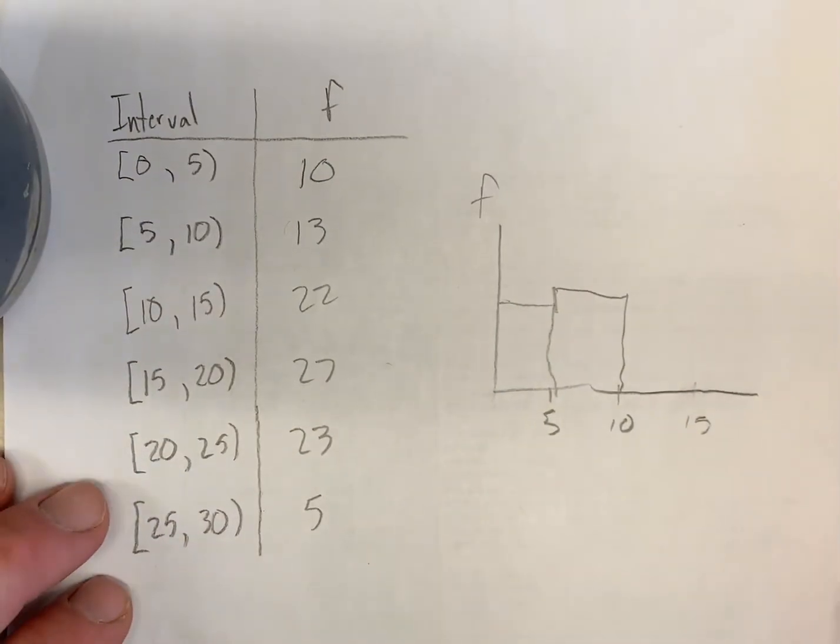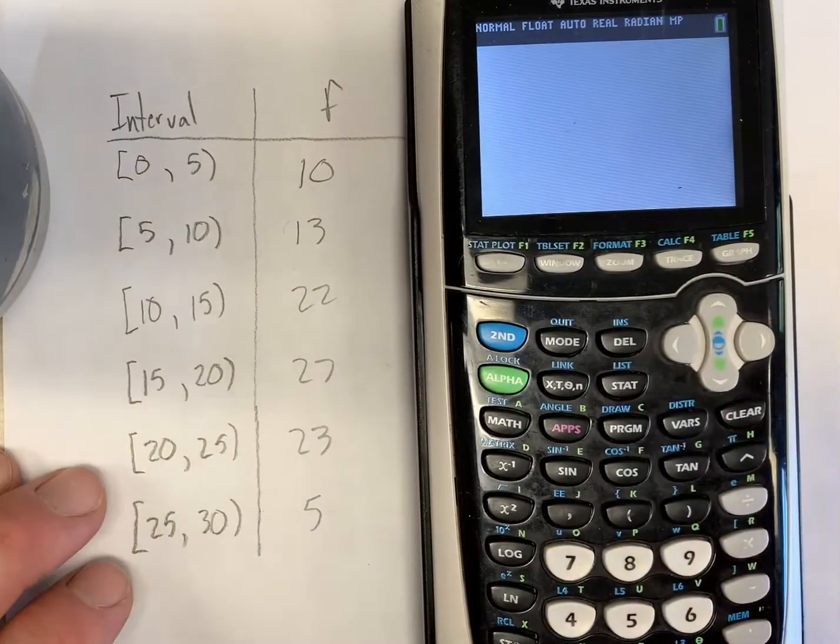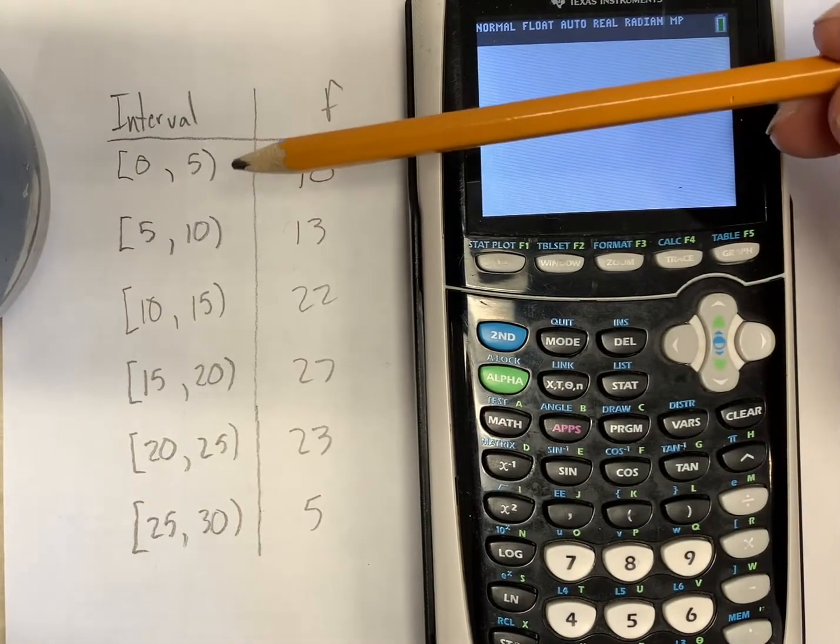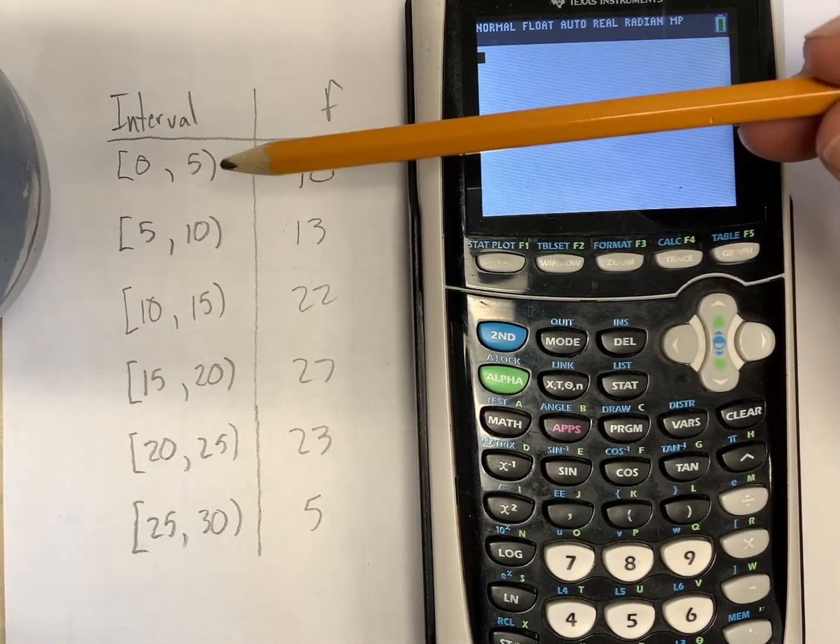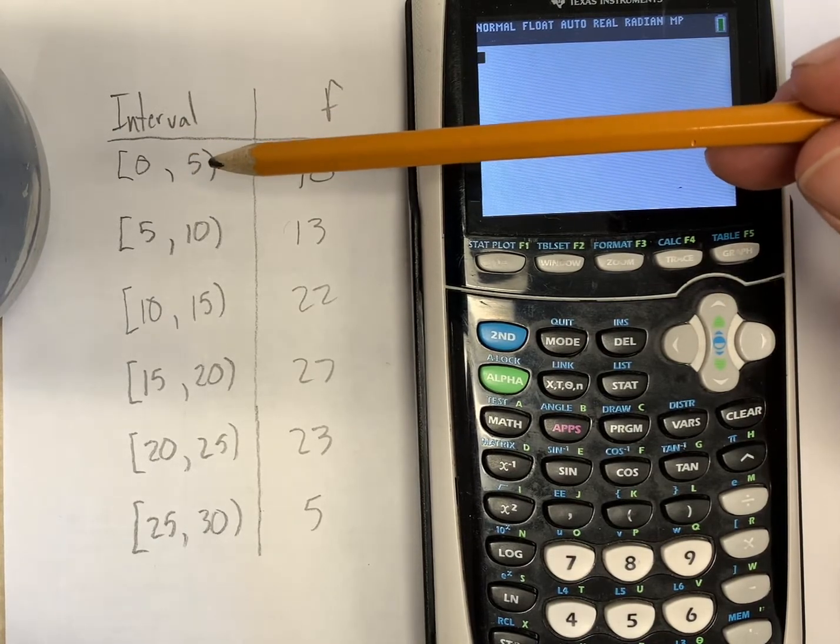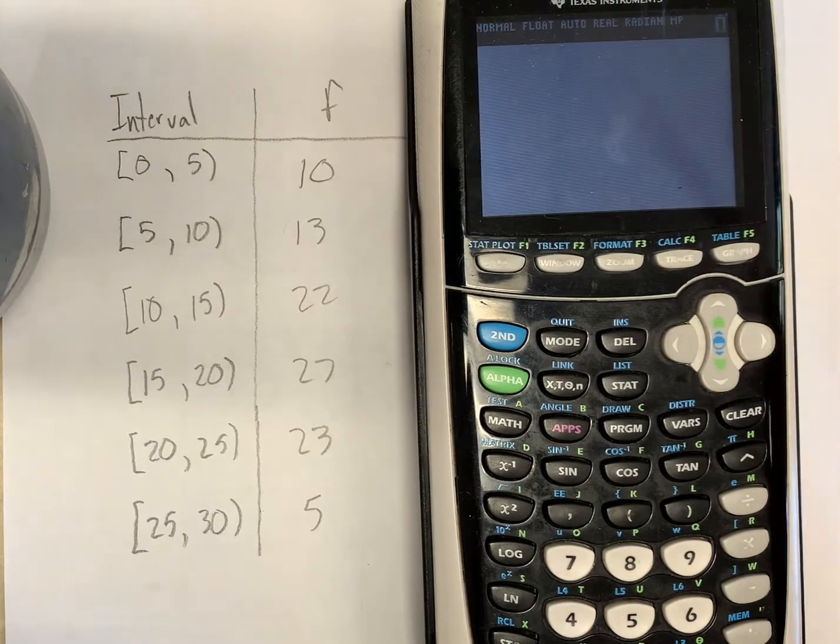But what if we wanted to use our graphing calculators to do this? So it's easy and it's hard as well. Previously when we were calculating averages we would have taken the mid-interval value. So what's halfway between 0 and exactly 5? This would be 2.5 would be our mid-interval value here, 7.5 for this one.